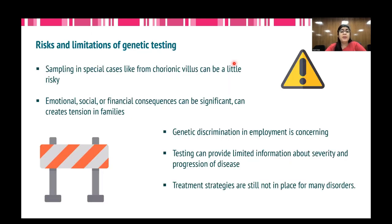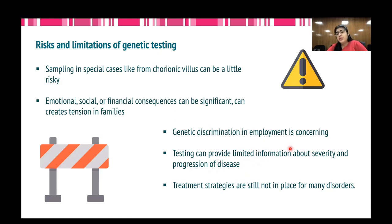Throughout this presentation, we have discussed the benefits and uses of genetic testing, but it is important to emphasize that genetic testing is not free of risks and limitations. Sampling is generally a risk-free process, but in some cases — such as chorionic villus sampling — it can be a little risky. There are emotional, social, and financial consequences of genetic testing that can create tensions in families. For some people, genetic discrimination in employment can be very concerning. Even if you get a positive genetic test result, you cannot get complete information about the severity and progression of the disease over your lifetime. Probably most importantly, while we can test many diseases using different genetic techniques, treatment strategies are not in place for many of these disorders.